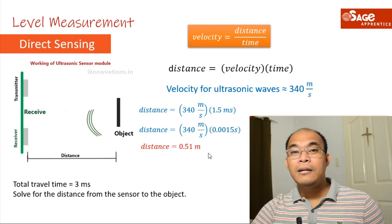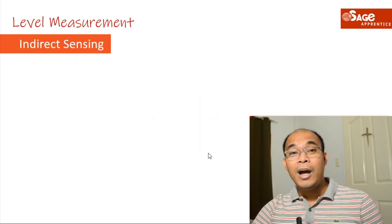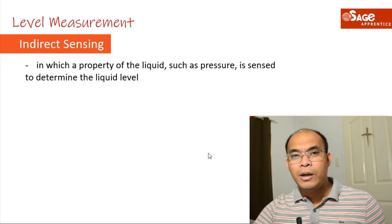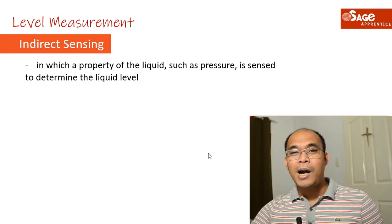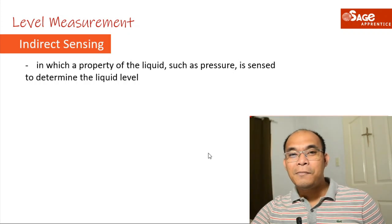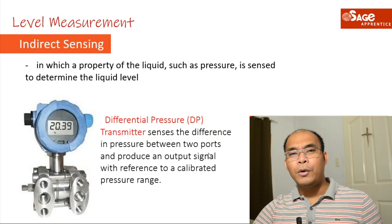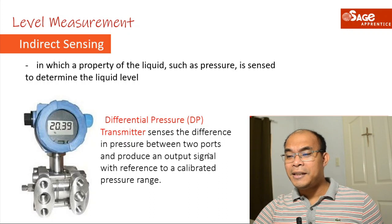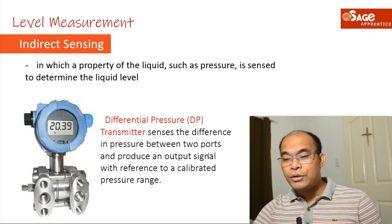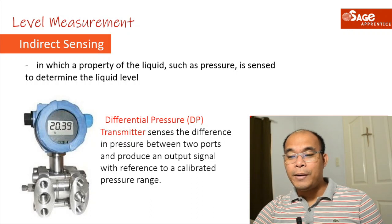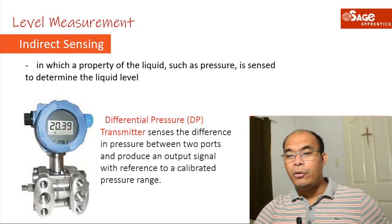Now we look at indirect sensing, where a property of the liquid — such as pressure — is sensed to determine the liquid level. The physical quantity itself is not directly measured; instead, related quantities such as pressure are used. The most common device used here is the differential pressure (DP) transmitter, also called the delta-P transmitter. This transmitter senses the difference in pressure between its two ports and produces a signal referenced to a calibrated pressure range.